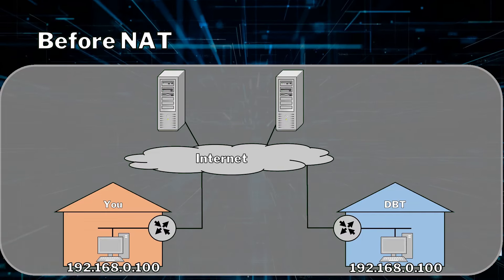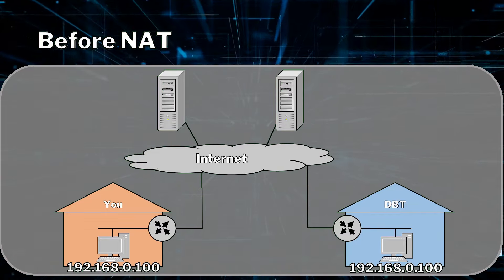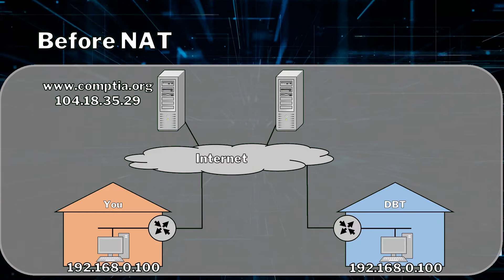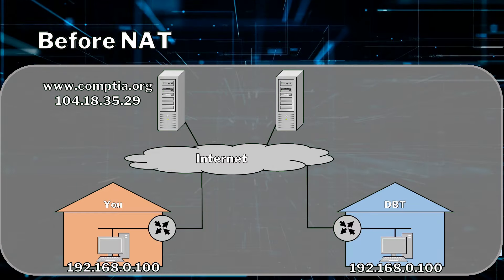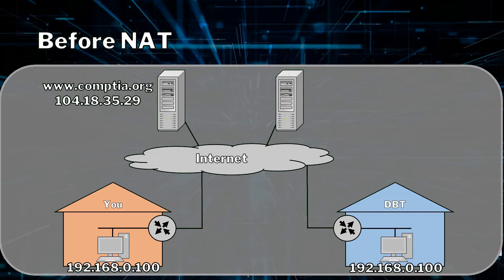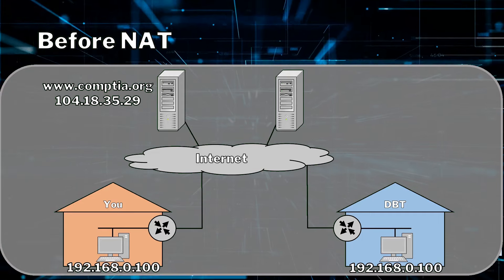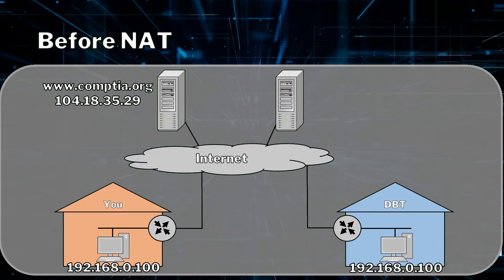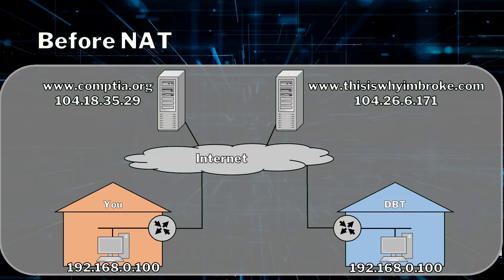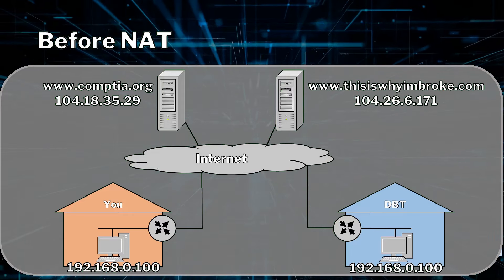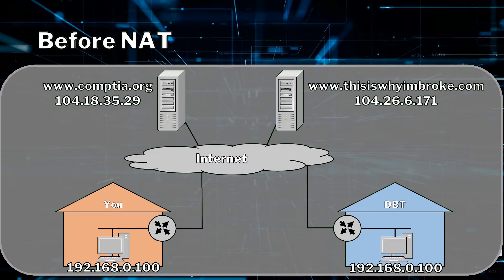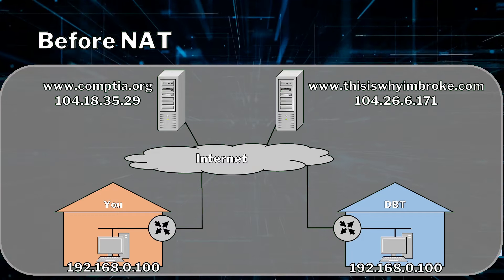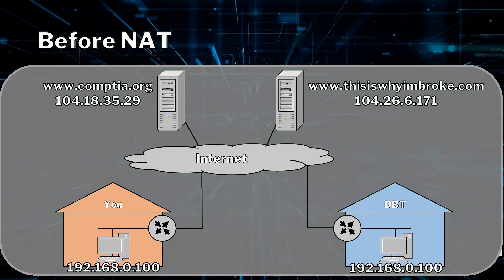Now we're both going to go onto the internet. You're going to be a diligent learner going to www.comptia.org, which at the moment when I record this video is 104.18.35.29. And me, well, I'm wasting time — I'm screwing around on thisiswinebroke.com, which at the time of the recording is 104.26.6.171 for its public IP address.